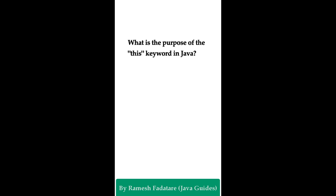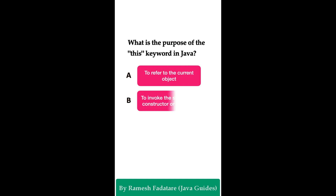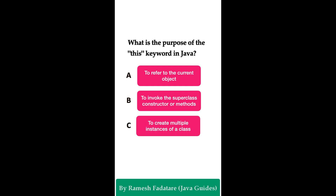Welcome to Java quiz series. Here is one more question: What is the purpose of the this keyword in Java? Option A: to refer to the current object. Option B: to invoke the superclass constructor or methods. Option C: to create multiple instances of a class. Option D: to hide the data and methods within a class.